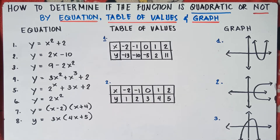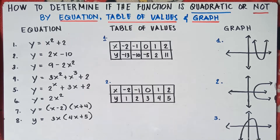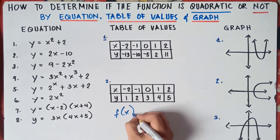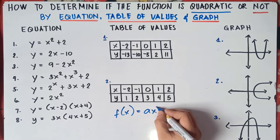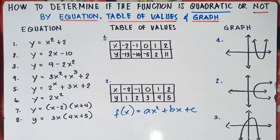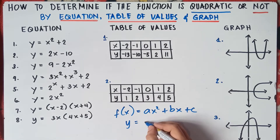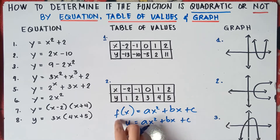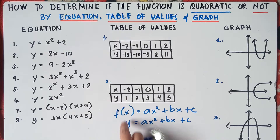Let's start with equation. In quadratic function class, you need to know the general form of quadratic function. The equation of quadratic function is f(x) = ax² + bx + c. You can also write this as y = ax² + bx + c. So f(x) equals y — you can write either of these two.